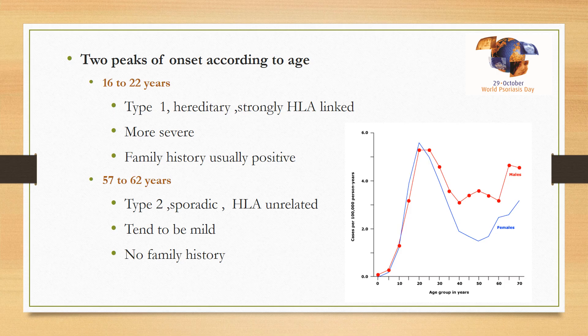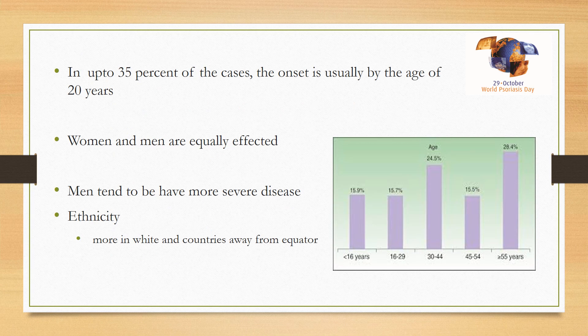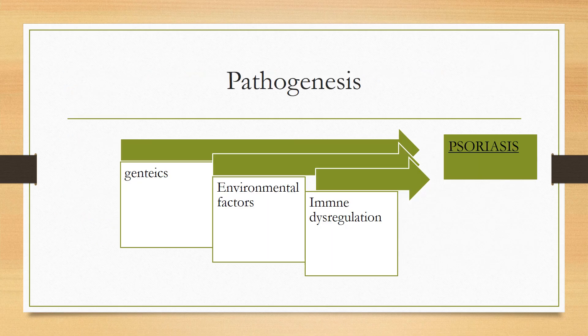Regarding age, the two peaks of onset are 16 to 22 years and 57 to 67 years. These two peaks led to the concept of two different types of psoriasis. Type 1, presenting in early age, is strongly hereditary, HLA-linked, tends to be more severe, and family history is usually positive. Type 2, presenting later, is sporadic, not linked to family history or HLA, and tends to be mild. Women and men are equally affected, though some studies show male predominance, and males tend to present with more severe disease and require more systemic therapies.